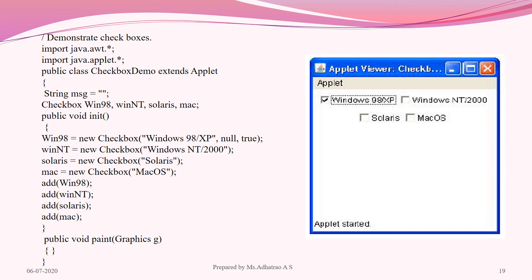In the checkbox example, I am creating checkbox objects with the names of operating systems. For Windows 98, I am passing the string, null, and true — using one of the constructors. After checkboxes are defined, we must add them using the add() method. Running the program with applet viewer displays the window as shown.